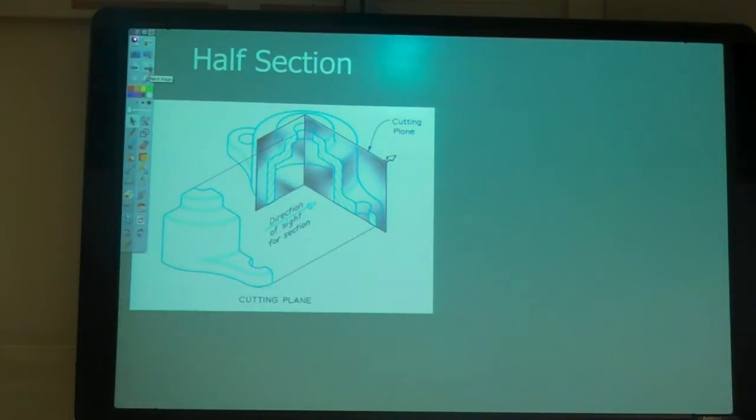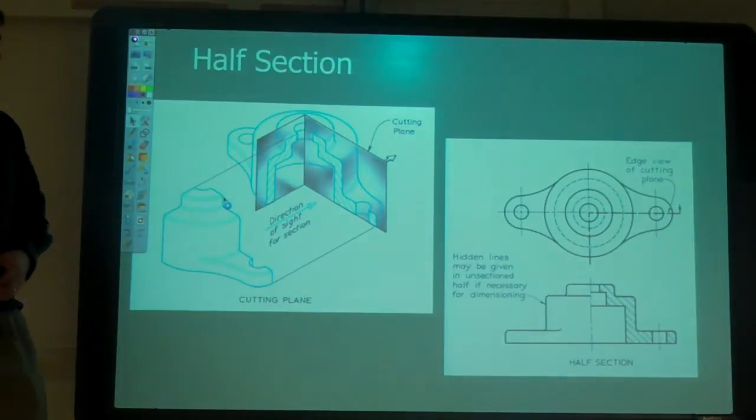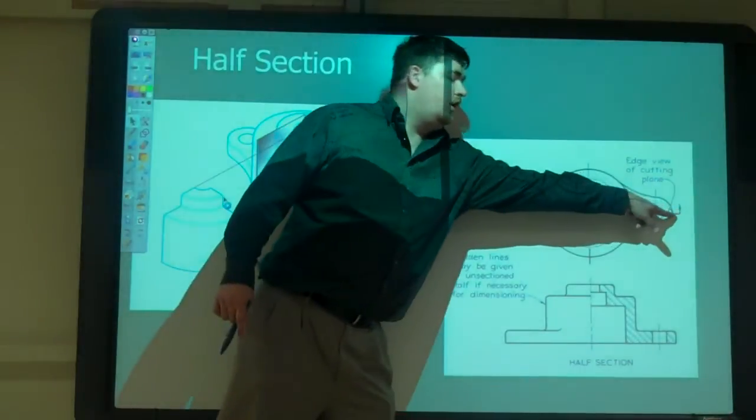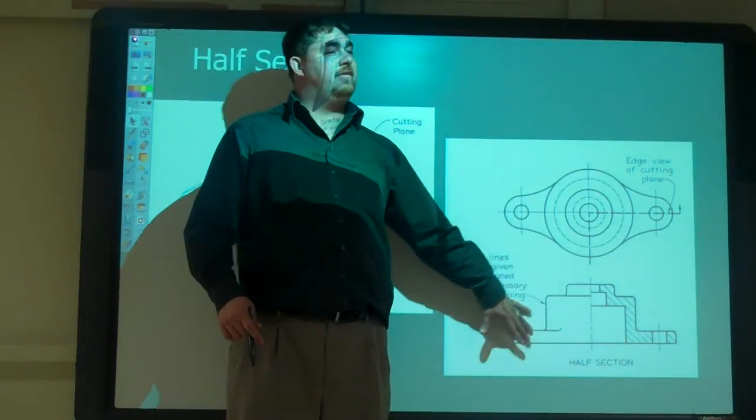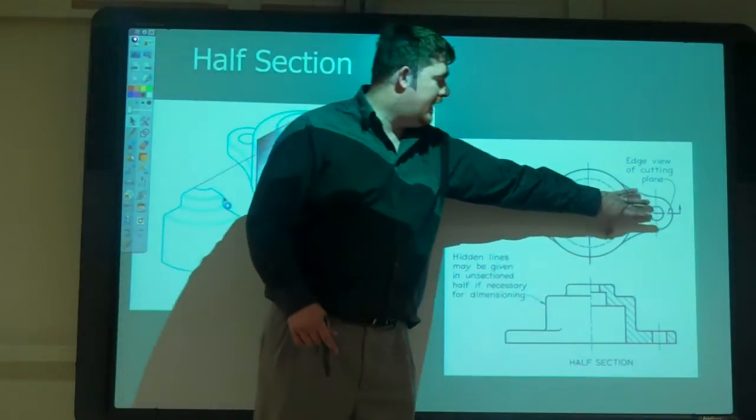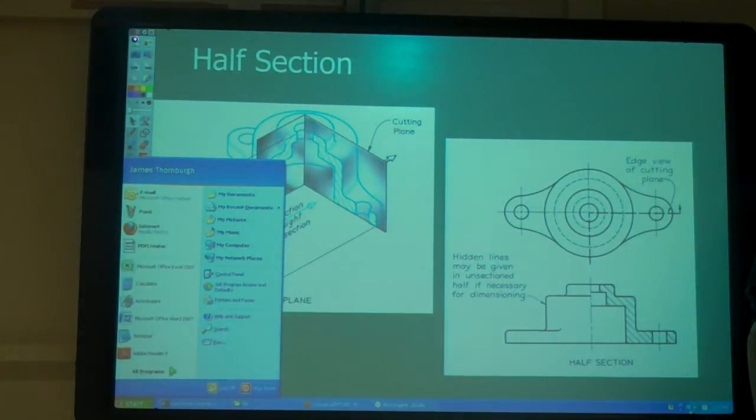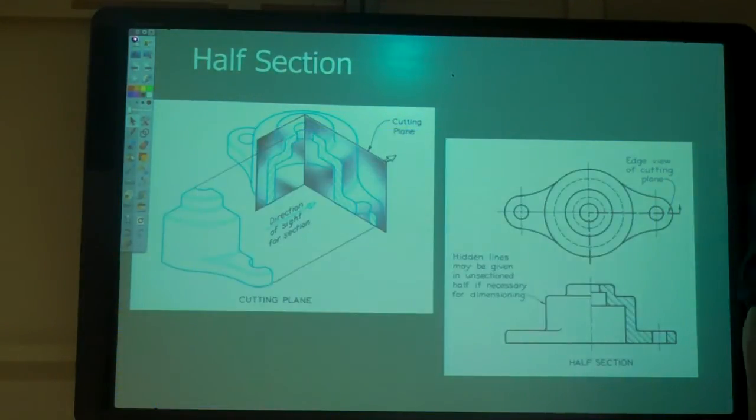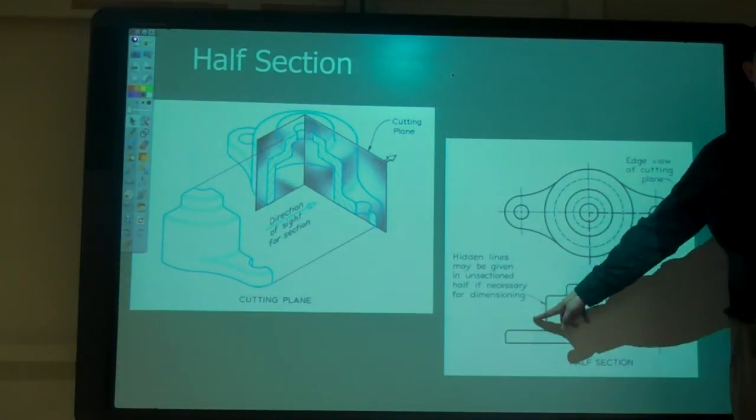So what's the difference between a half section here and a full section that we did last week? A half section shows half of the actual drawing, the outside. Yeah. Because last week we did our section all the way across, right? And so our section view is 100% the inside of the part. For the half section, we're just taking half of the view away, inserting half the view and making a section out of it, and half still sees the outside.